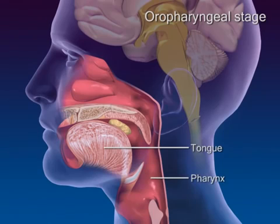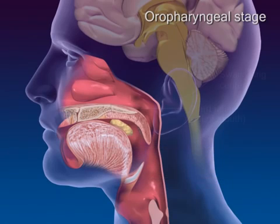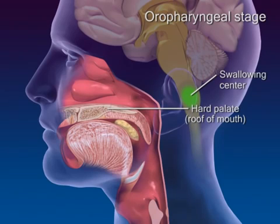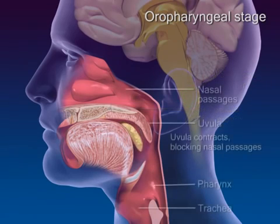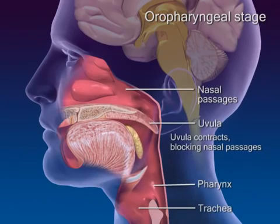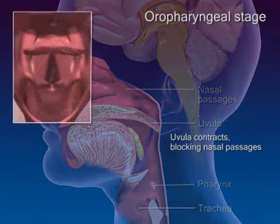In response to activation of pharyngeal pressure receptors, the swallowing center in the medulla initiates reflexes that prevent food entry into respiratory passageways. The uvula contracts, which blocks the nasal passages from the pharynx.